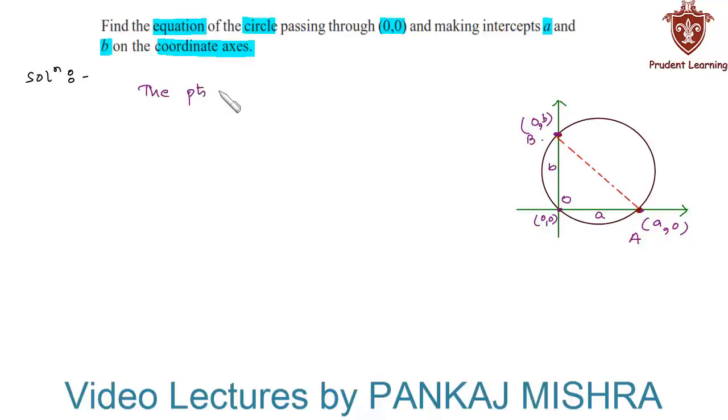The points A having coordinates (a, 0) and B having coordinates (0, b) lie on the circle. Also here angle AOB is 90 degrees since it is the point of intersection of the coordinates. Therefore this angle must be 90 degrees.